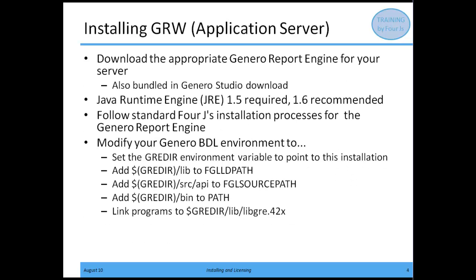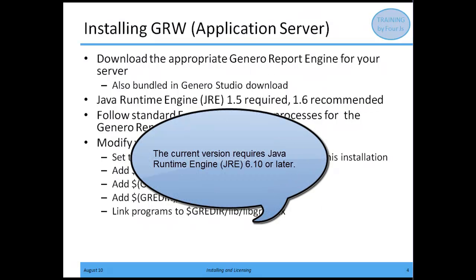As far as installing GRW, you need to first download the appropriate bundle. If you're doing standalone, you'll download the appropriate GRE bundle. If you're doing the entire suite, you'll download the appropriate Genero Studio bundle. When doing this download, you need to make sure that the package matches the OS and the hardware that you're installing on. You need to have a Java Runtime Engine — we require 1.5, although we recommend 1.6.